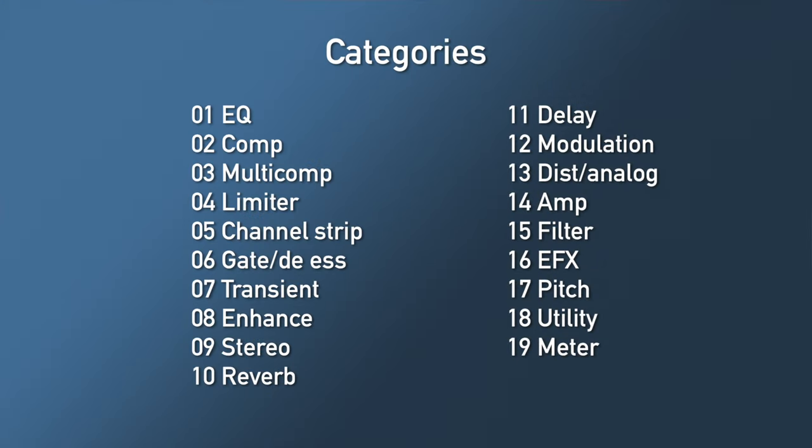I made 19 categories, because I don't want too many plugins in each one — it makes it easier to find. The first one is EQ, then a Compressor folder. Next is Multi-compressor, which I made a separate category instead of having it with Compressor, because I use them for different tasks. Then we have Limiter and Channel Strip.